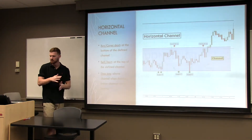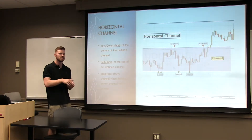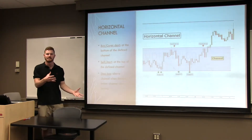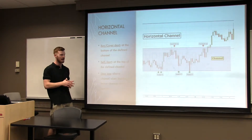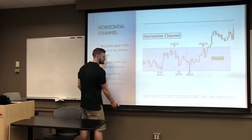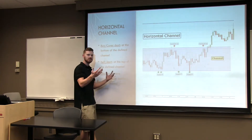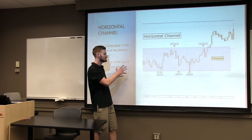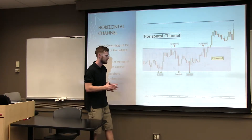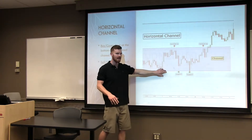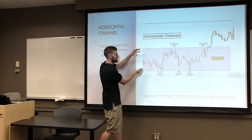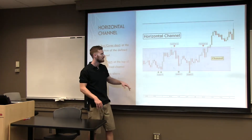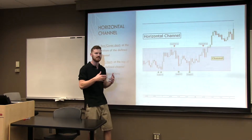The first channel I'm going to cover is the horizontal channel. This one usually happens after a stock has risen an exuberant amount and it needs to kind of cool off — it's a consolidation pattern. You can imagine a stock running 20%, 30%, 100%, 200%, and then it needs to cool off. As you can see here, we do have two parallel trendlines, and you can see it's been tested four times from support and two times on resistance, giving it a total of six tests.